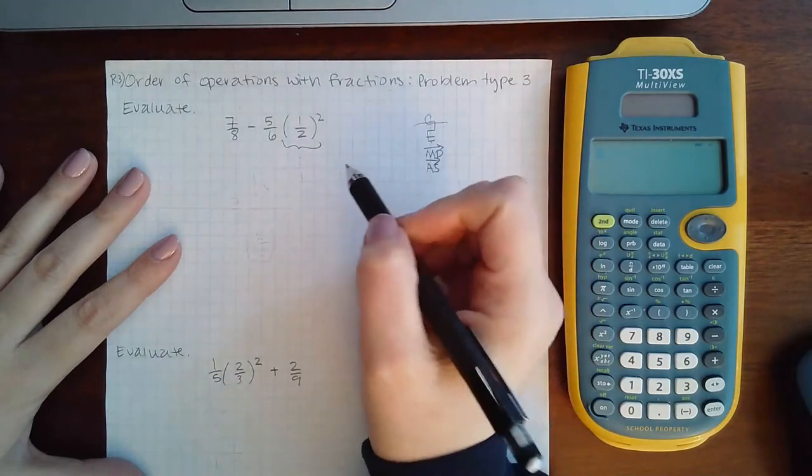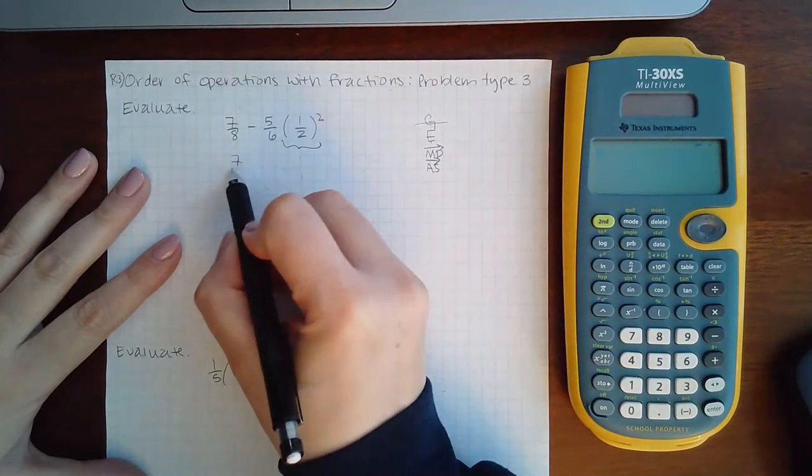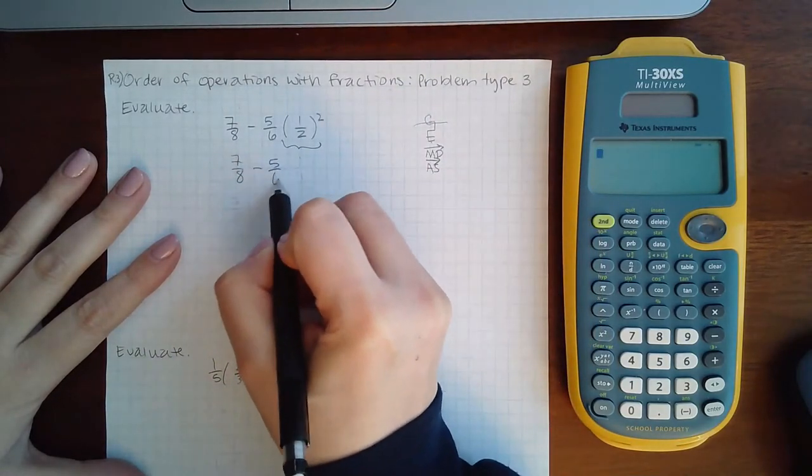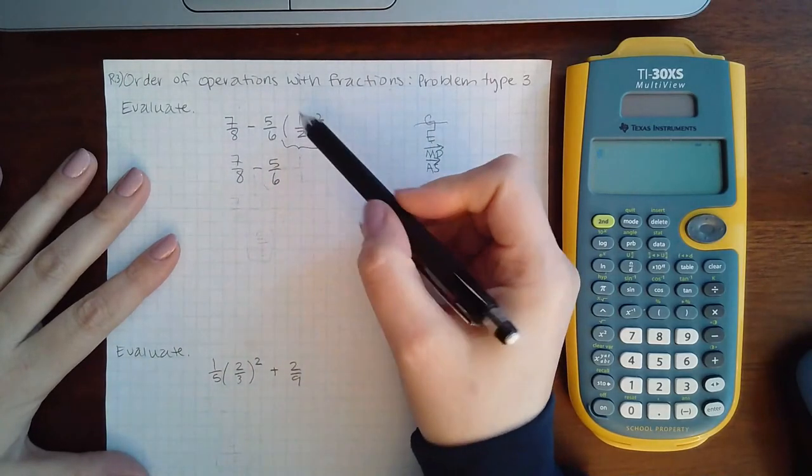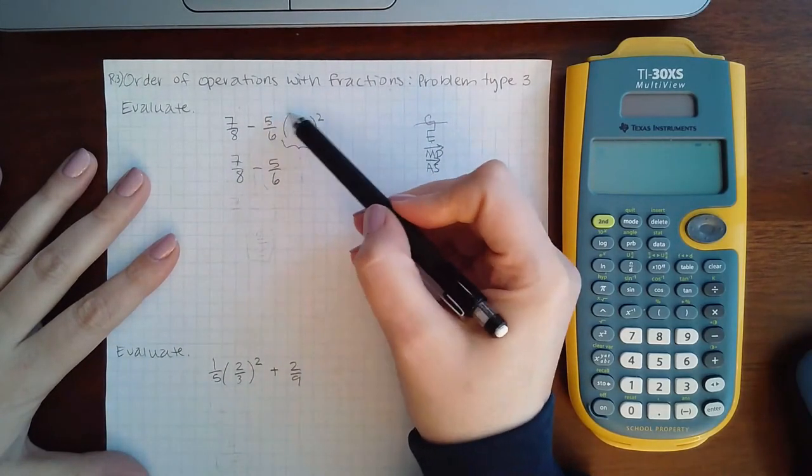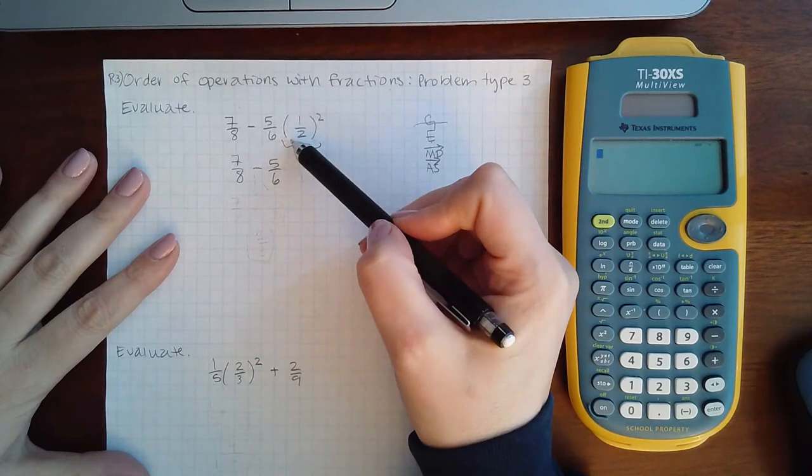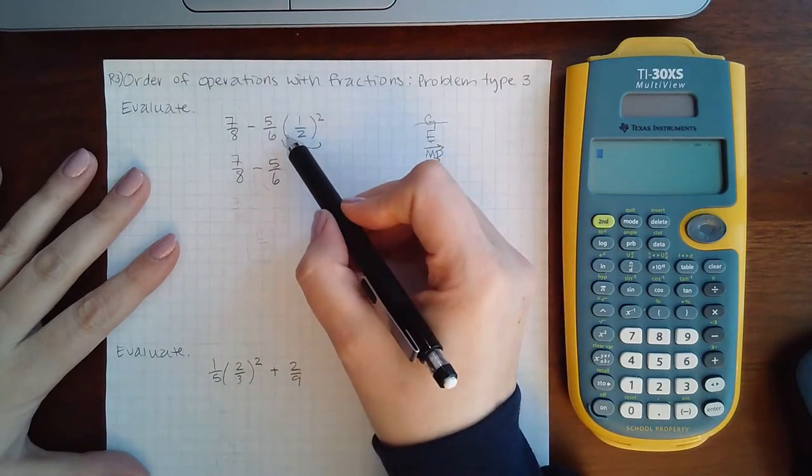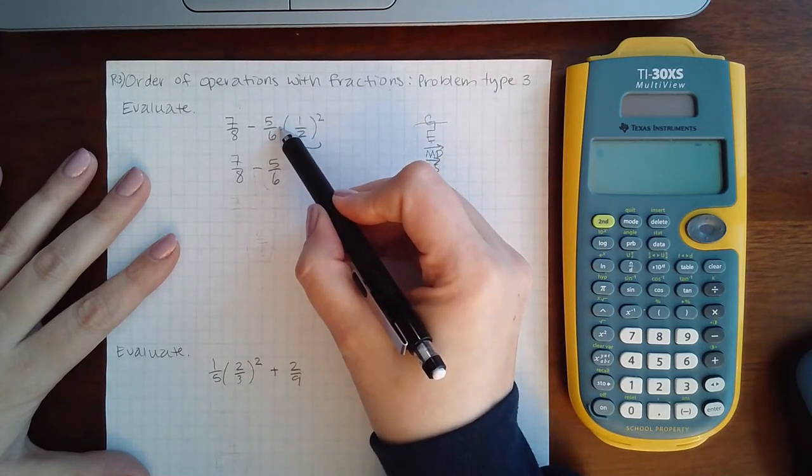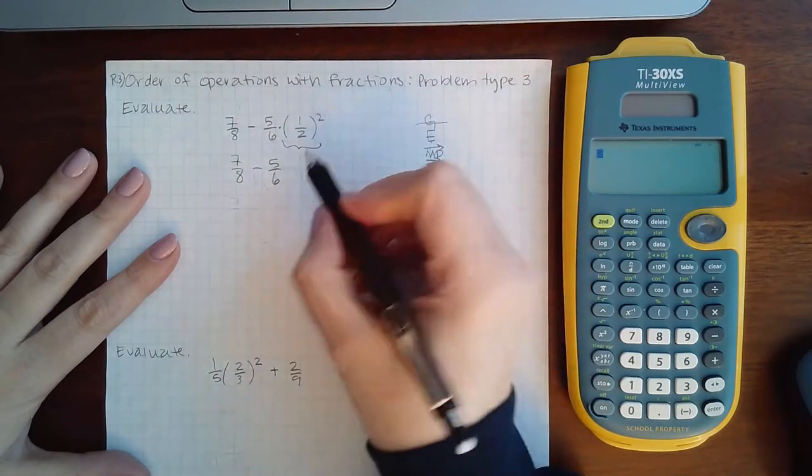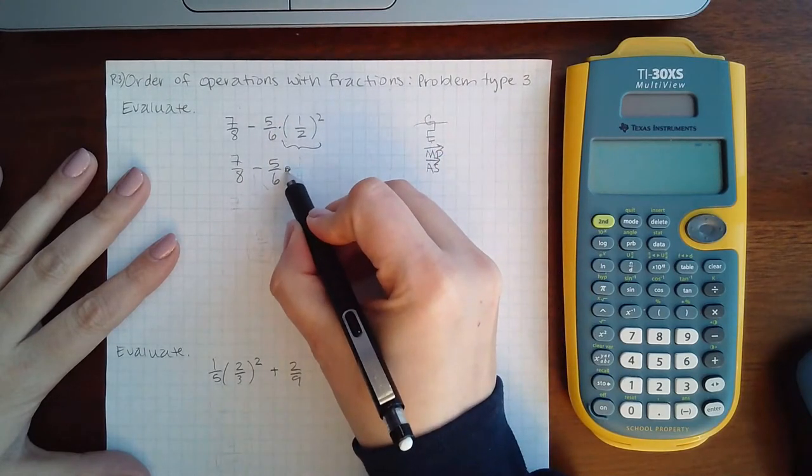We do have something that we need to evaluate so I'm going to bring down the rest of the problem. Now one thing we need to remember is that when we have a number right outside of a parentheses it is automatically understood that there is a hidden multiplication in between those.